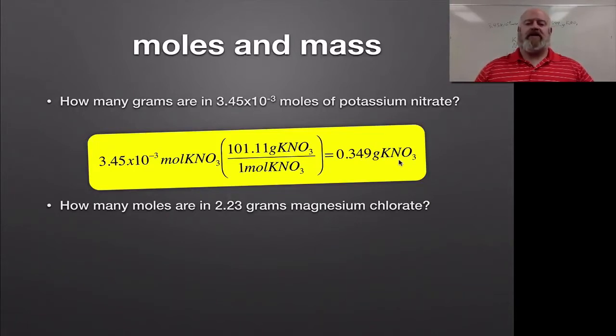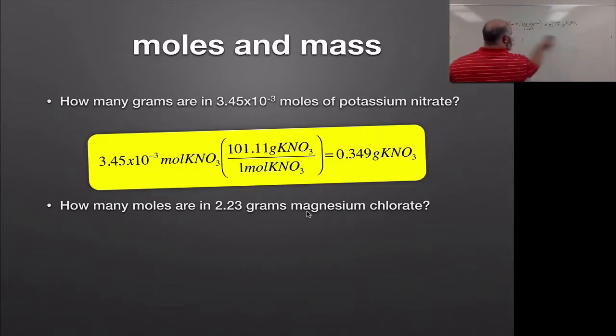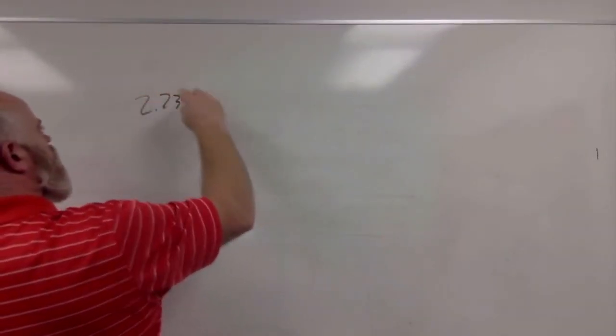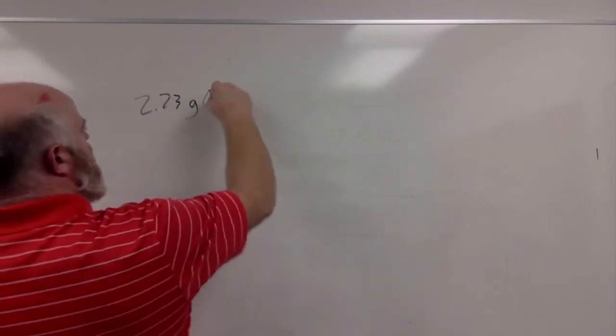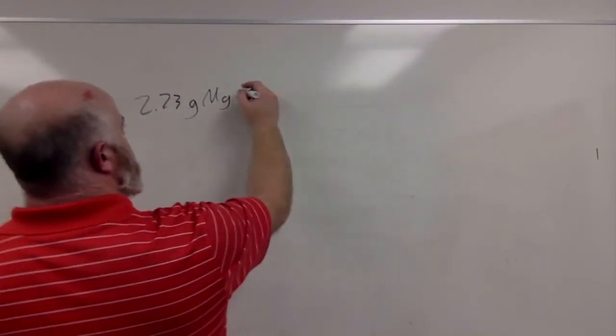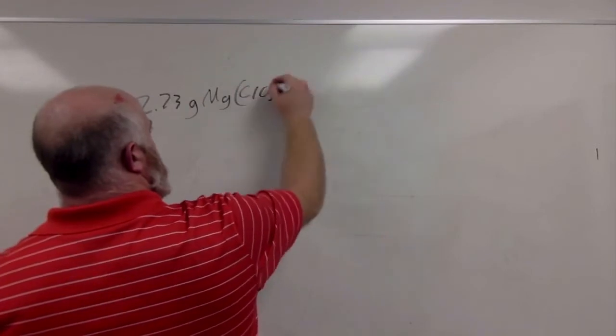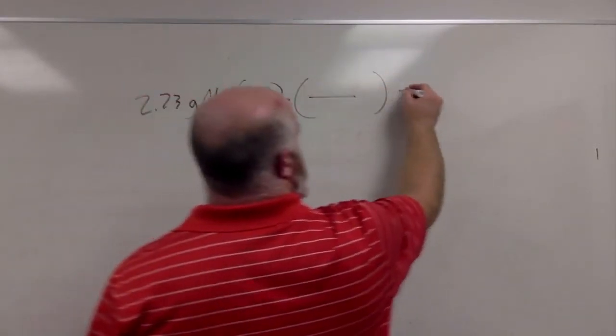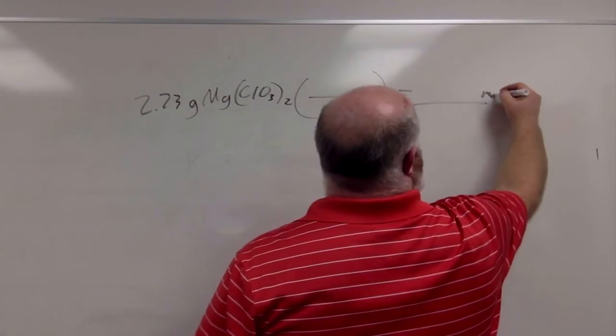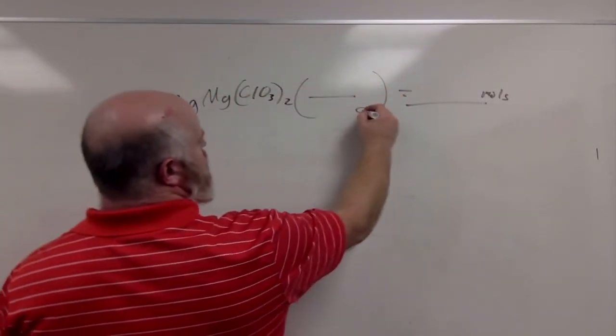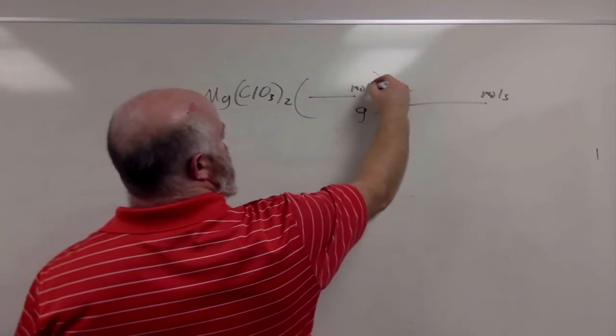We can do the exact same thing for our next problem. In this case, we want to know how many moles are in 2.23 grams of magnesium chlorate. We know the grams of magnesium chlorate and we're solving for moles. Our grams will be on the bottom and our moles will be on the top.